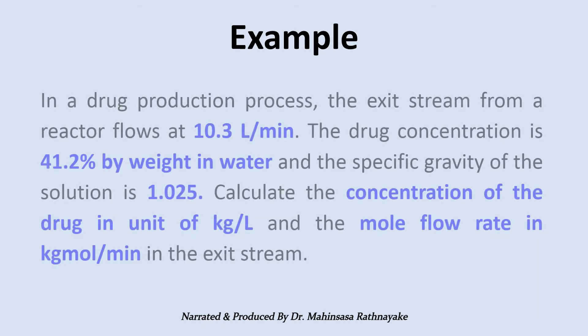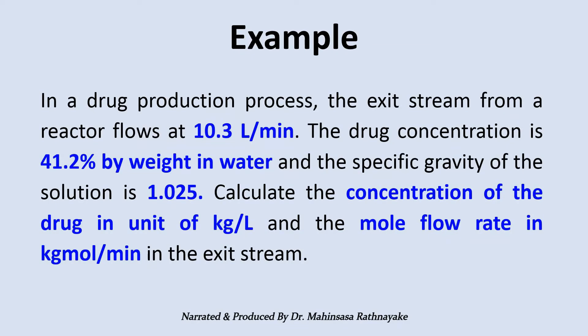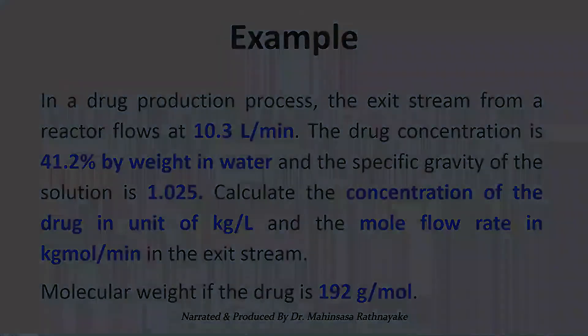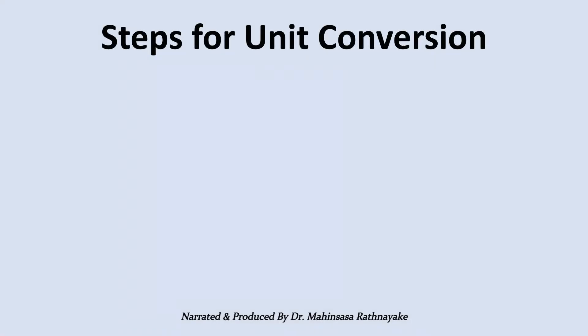Our example problem: In a drug production process, the exit stream from a reactor flows at 10.3 liters per minute. The drug concentration is 41.2% by weight in water, and the specific gravity of the solution is 1.025. We need to calculate: (1) the concentration of the drug in kilograms per liter of solution, and (2) the exit stream molar flow rate in kilogram-mole per minute. The molecular weight of the drug is 192 grams per mole.